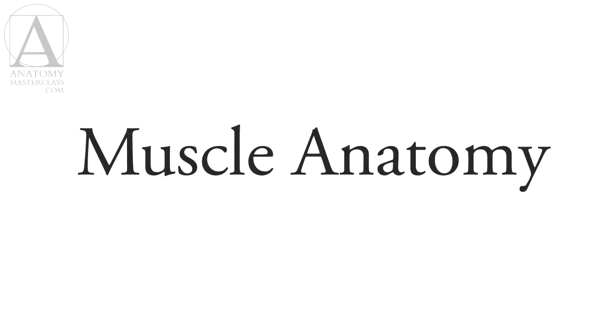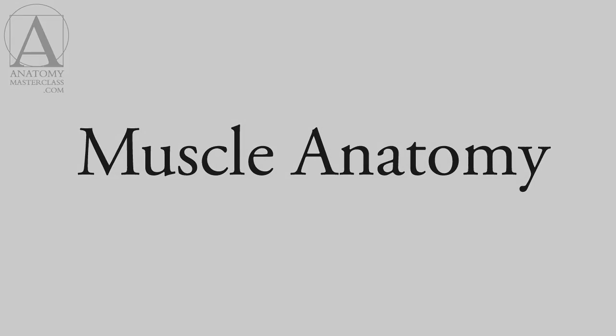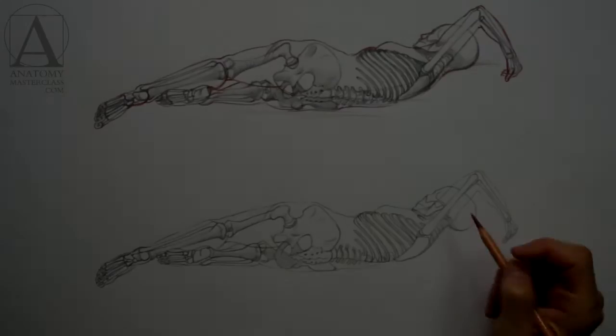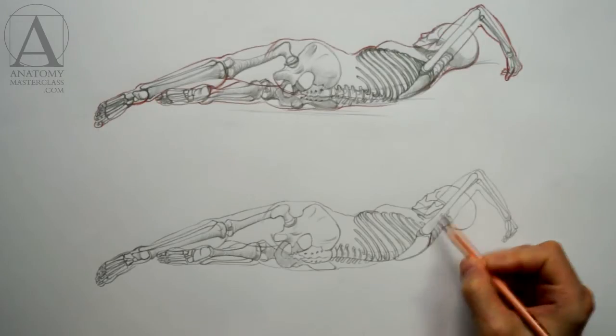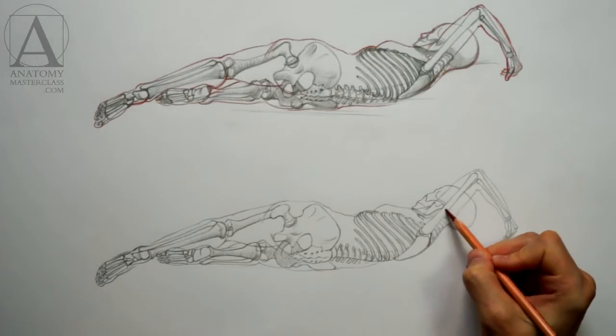Part 2: Muscle Anatomy. In this video lesson, you will repeat the muscle anatomy on the example of the reclining figure. I created another sketch of the skeletal system next to the previous one, and we will use this sketch for muscle anatomy.